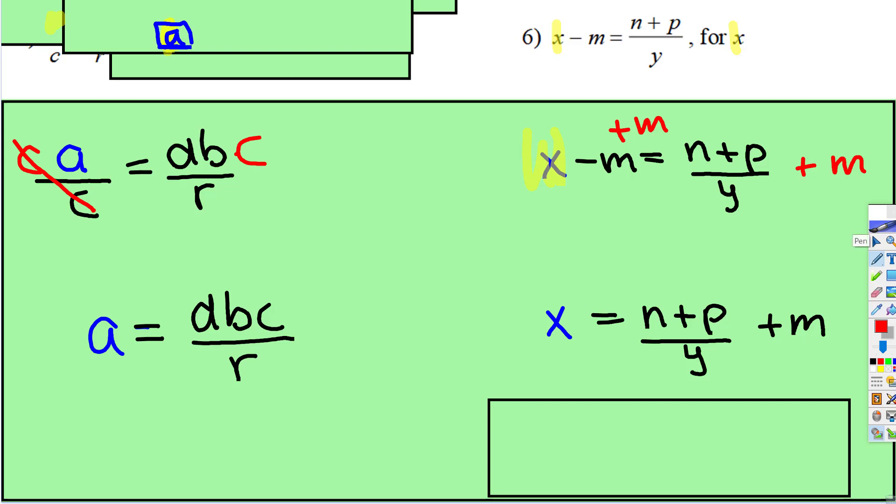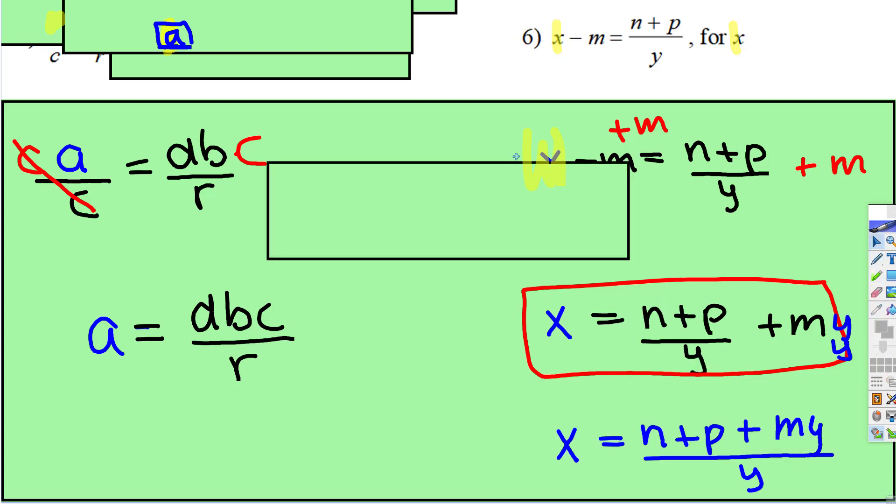And sometimes professors will want these to have the same denominator. By the way, this is the correct answer. But another way to write that correct answer is that you would multiply top and bottom by y and it could be rewritten like this.